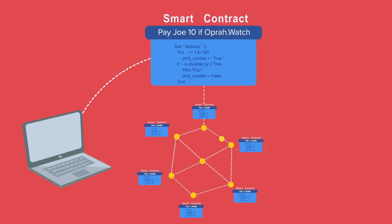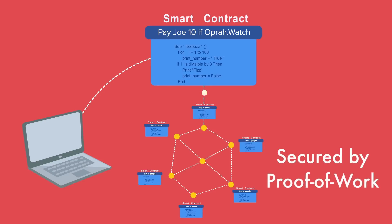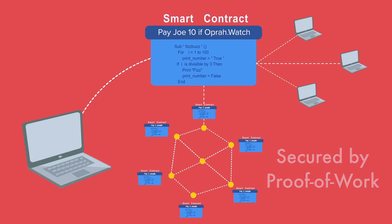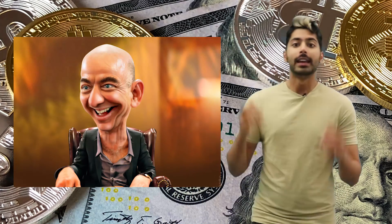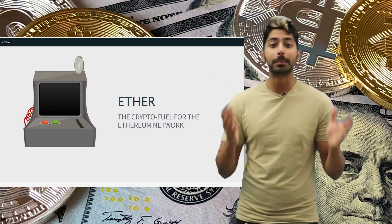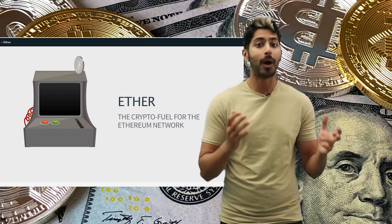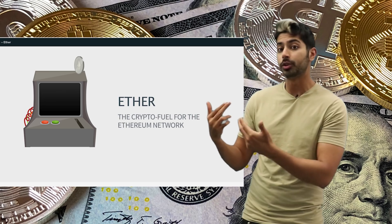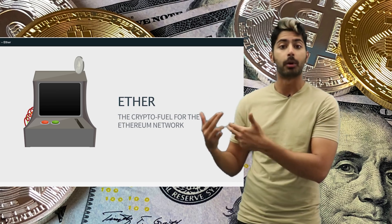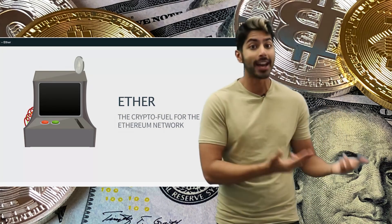It's like using a service like Amazon or Digital Ocean to upload programs and run them, except there isn't a single party behind it — sorry, not sorry, Mr. Bezos. Ether is the cryptocurrency that powers this network by allowing users to pay for smart contract transaction fees.